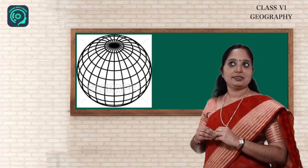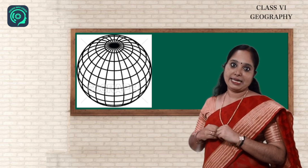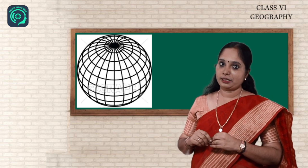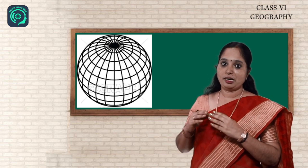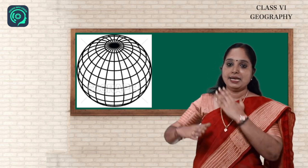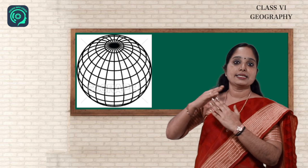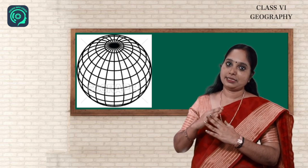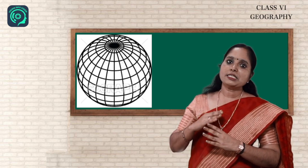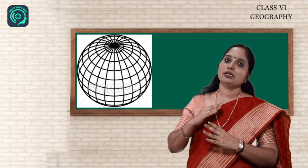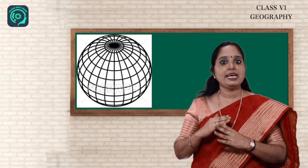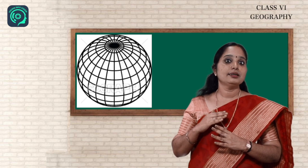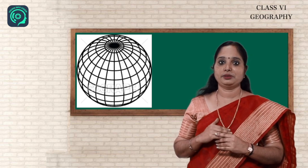For example, if you take the place Dubri in Assam, latitude 26 degrees north passes through this place and longitude 90 degrees east. These two lines meet at a point, and this point is Dubri in Assam. Likewise, we can find out the exact location of any place on the earth using latitudes and longitudes.